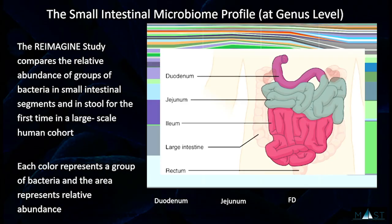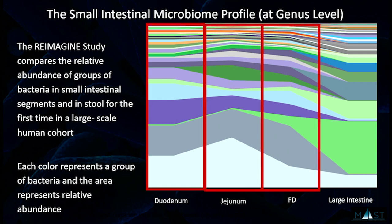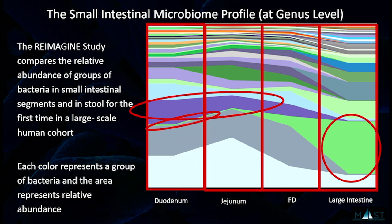The small intestine consists of the duodenum, jejunum, and ileum, followed by the large intestine. When we looked at the microbiome of these segments, we created a topographical map. Each color represents a cluster of microbes at the genus level. In the stool we see a lot of green; we hardly see any green in the duodenum. Conversely, we see a lot of purple in the duodenum but hardly any in stool. The profile of microbes is very, very different proximally versus distally — which is why we think looking at the small bowel is so important.